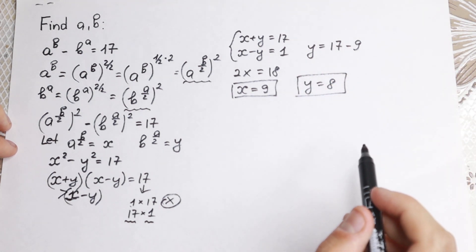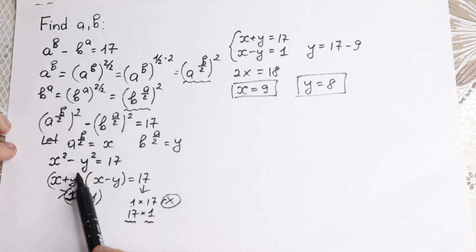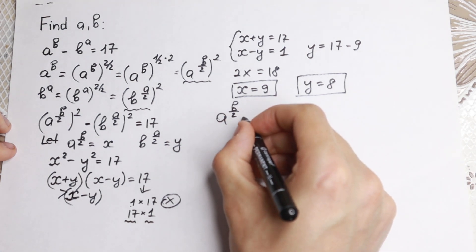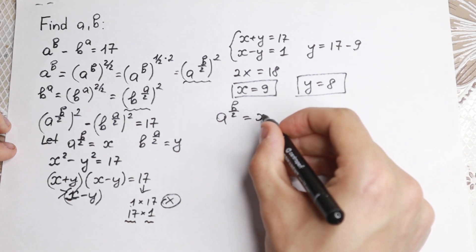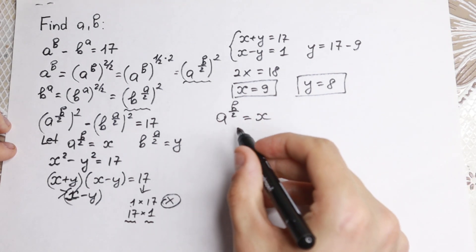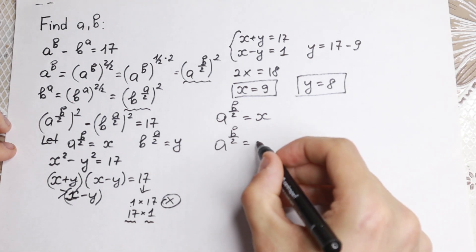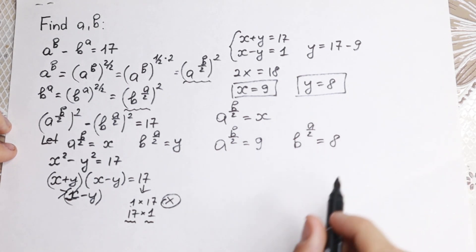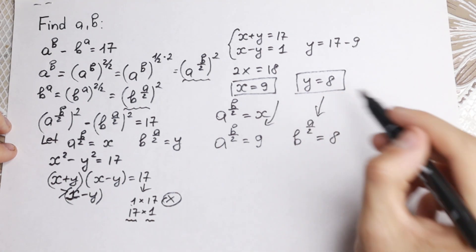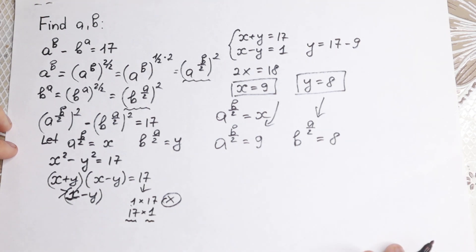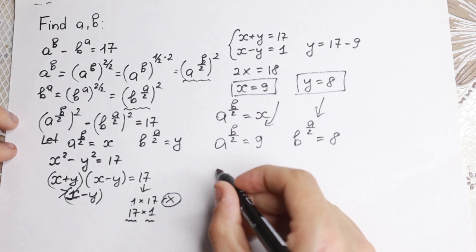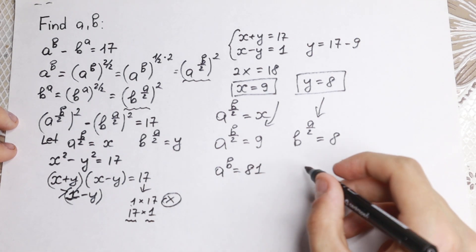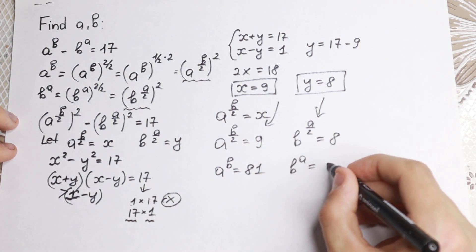Now we have x and y, but we need a and b. Recalling our substitution, a to the power b over 2 equals x equals 9, and b to the power a over 2 equals y equals 8. Squaring both sides of each equation: a to the power b equals 81, and b to the power a equals 64.